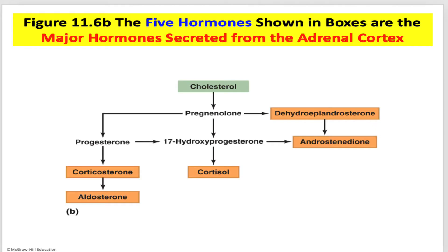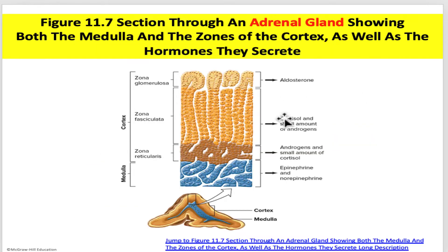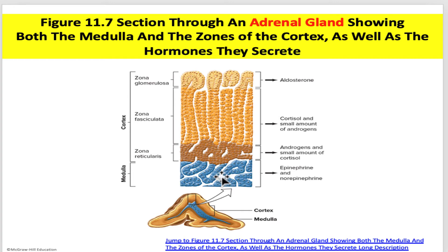At one time, the adrenal gland was considered the master gland of the body — not so any longer. Regardless, it produces five different major classes of hormone from cholesterol. There's no need to learn this relationship in detail; just understand that it can produce multiple types. The medulla produces epinephrine and norepinephrine. The cortex has three layers: the outermost produces aldosterone, the middle layer produces cortisol and small amounts of androgens, and the innermost layer adjacent to the medulla produces androgens as well as small amounts of cortisol.